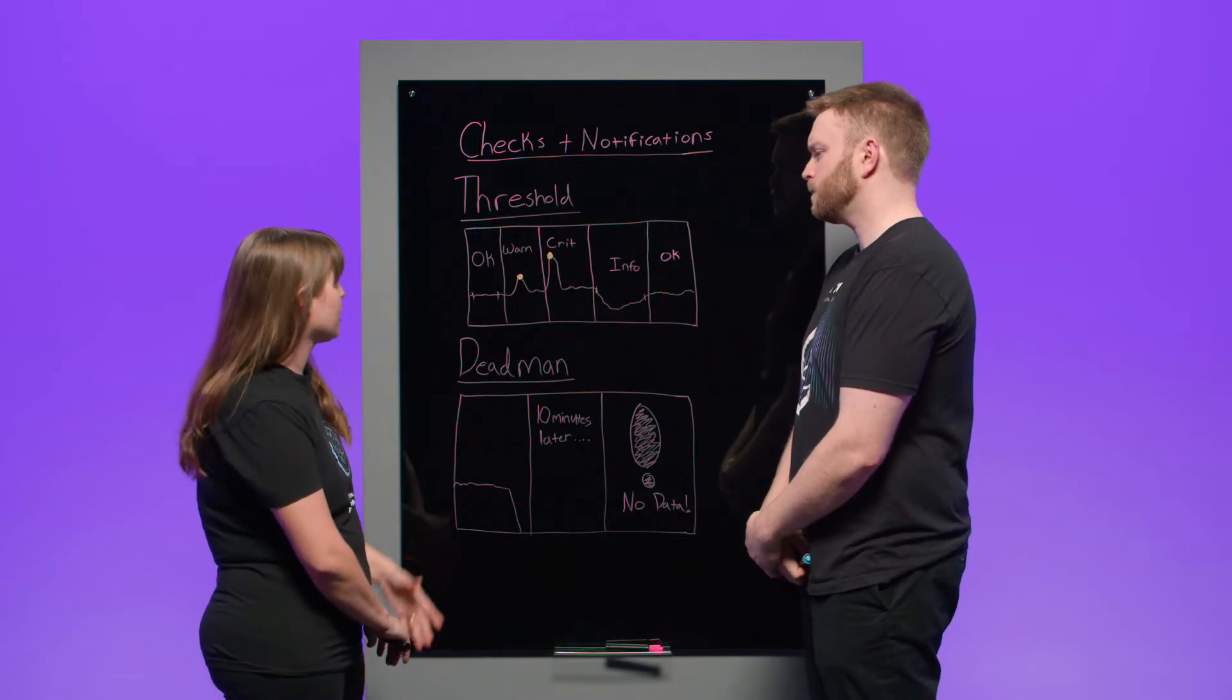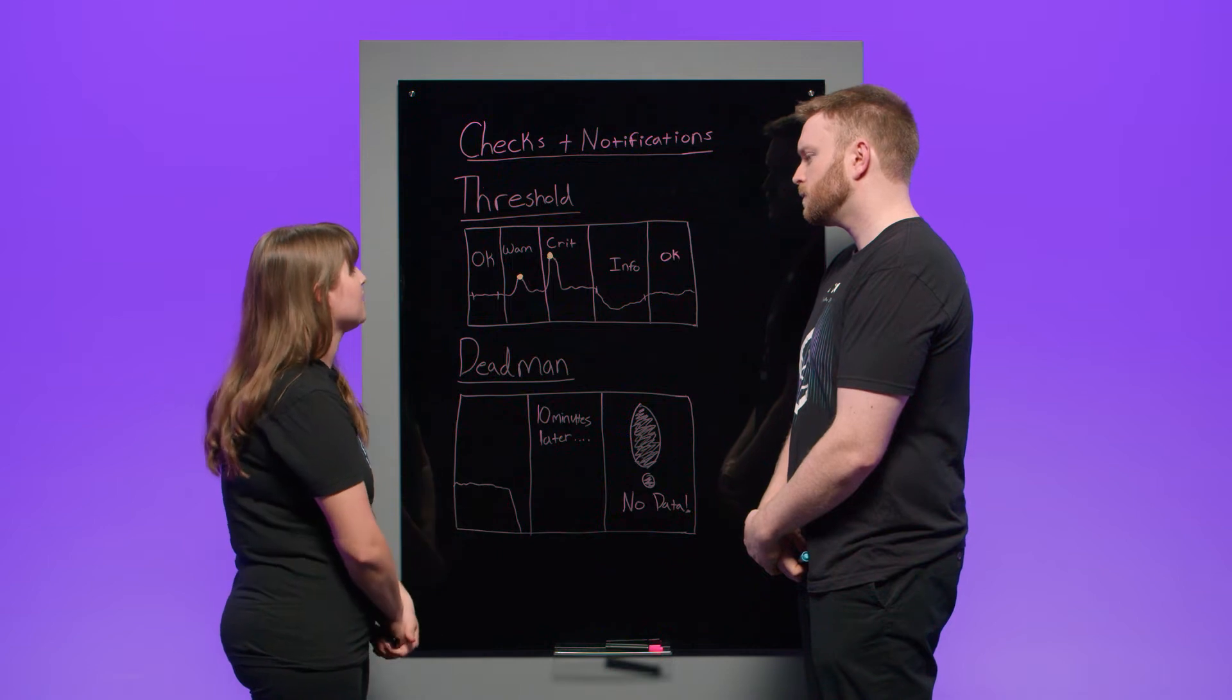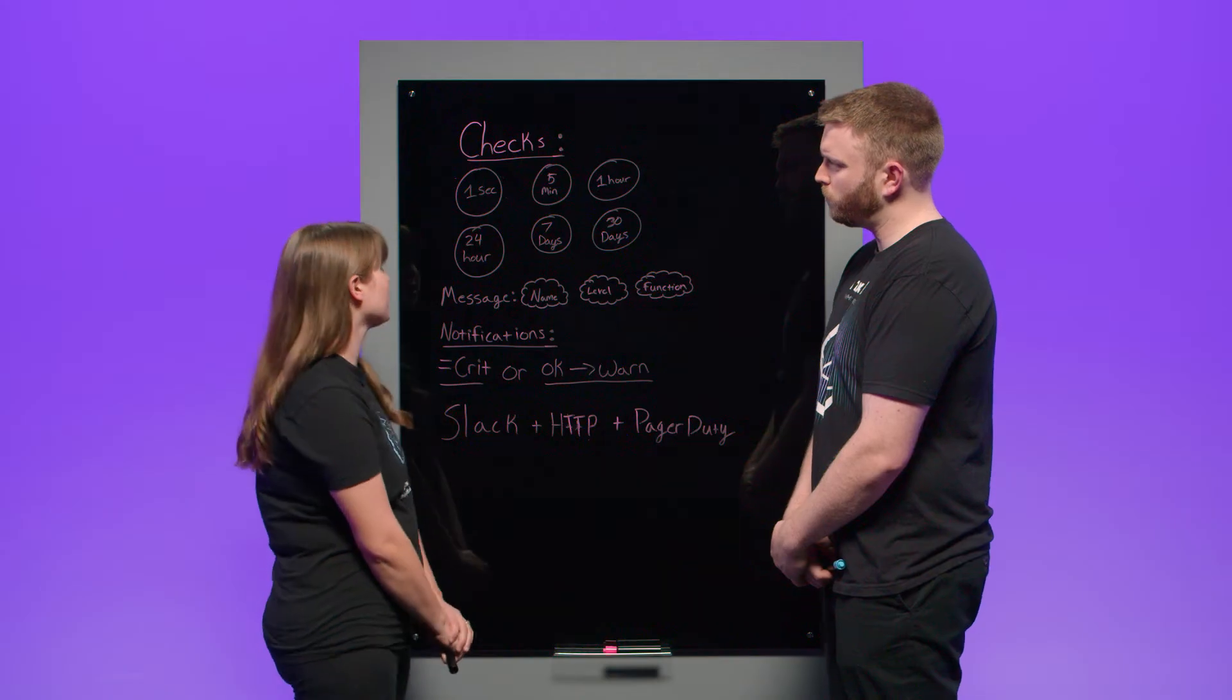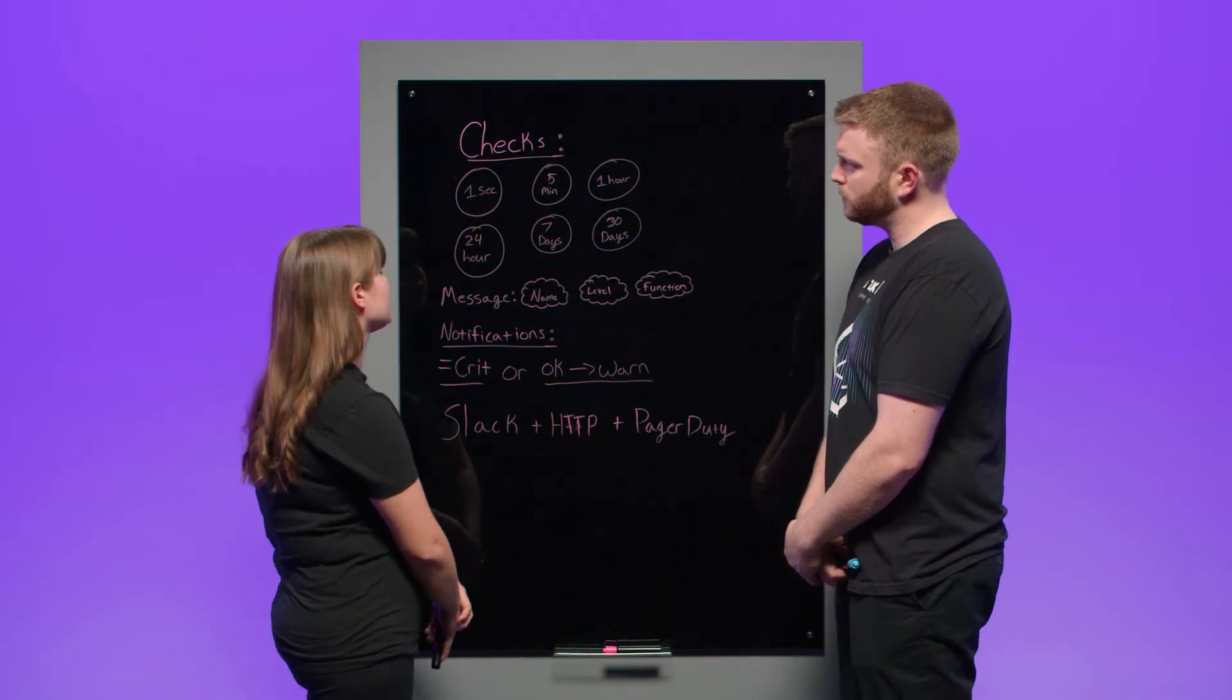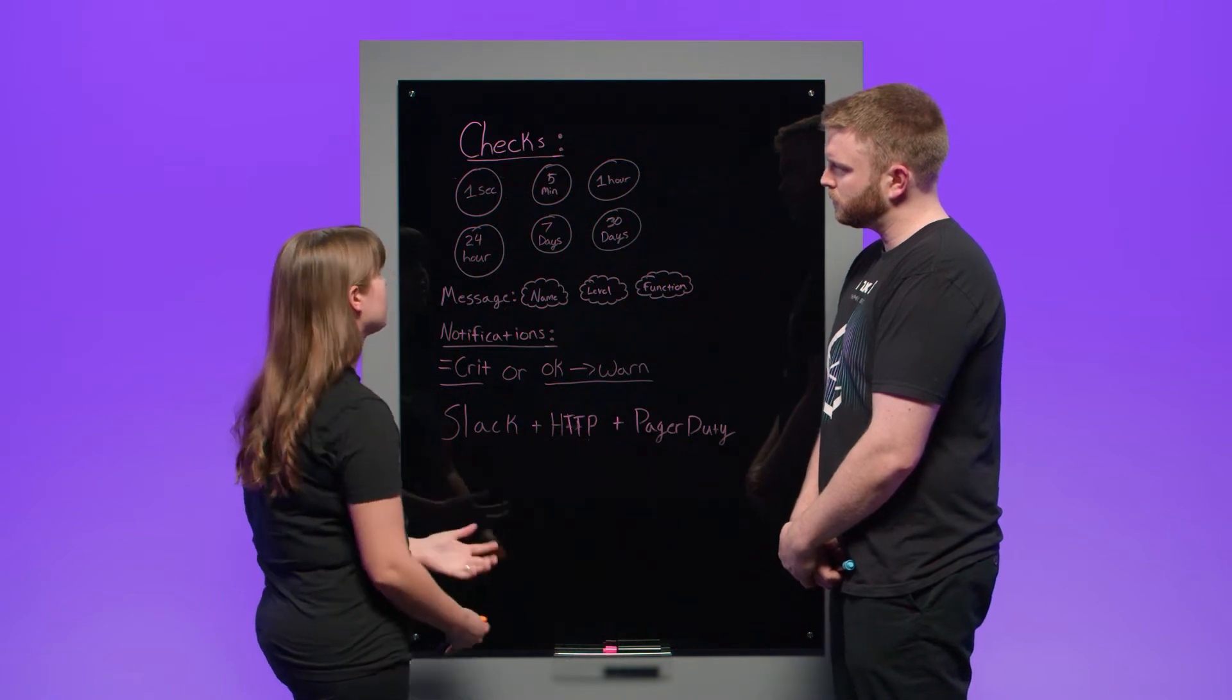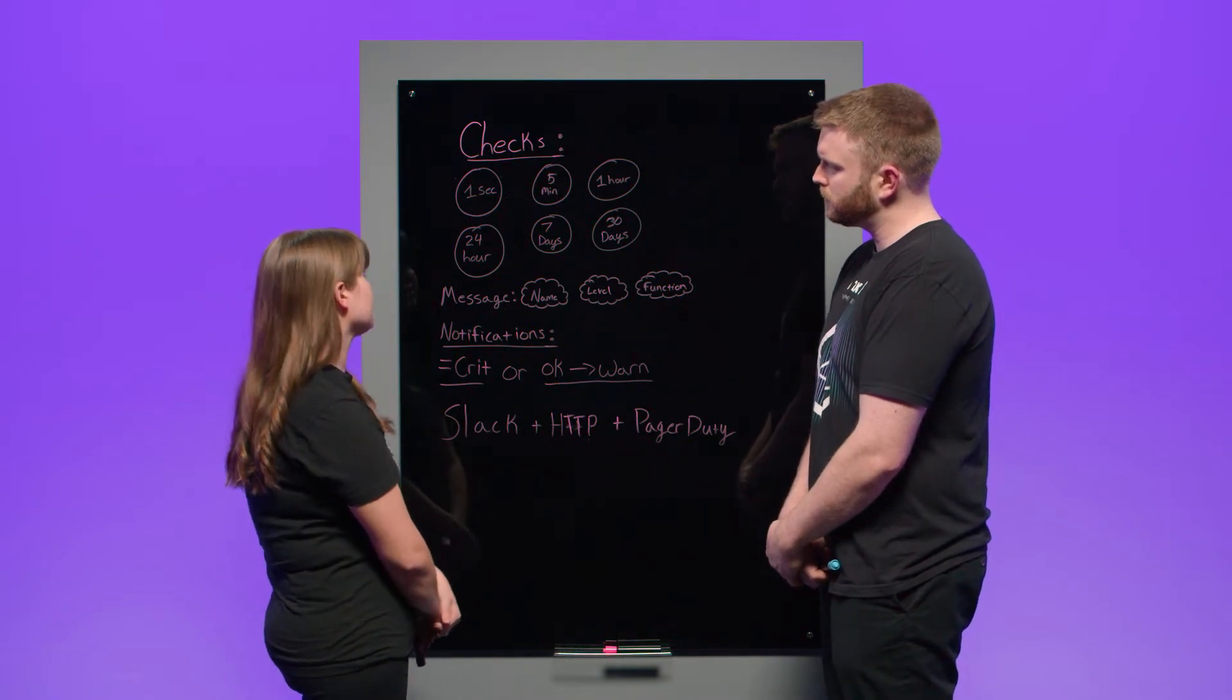And now we can start to go into some of the options that come with configuring these types of checks and configuring our notifications. Right on. So what kind of options do we have? Yeah. So when you are making a check, you're going to have a few different options for how you set it up. So the first thing you're going to need to pick is how often you'd like your check to run. Now, just to keep in mind, your check is separate, like I said before, from your notifications. So you can set it to run as pretty much often as you would like or as needed, pretty much, as I would like to say.